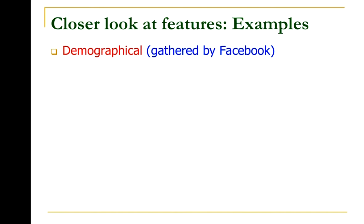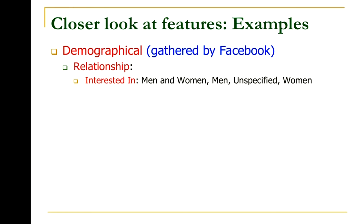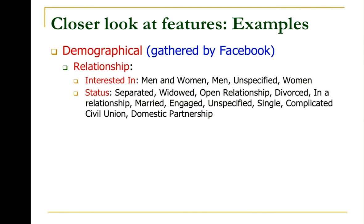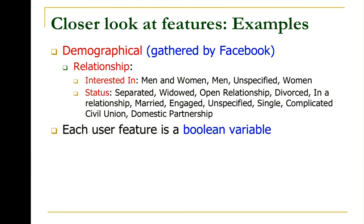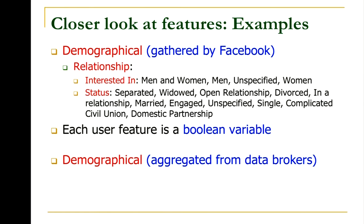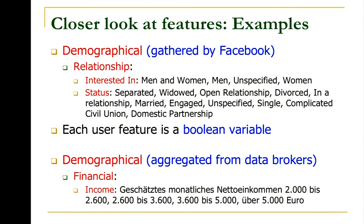To give a closer look at the granularity at which Facebook infers data: in demographic data there is a relationship field that categorizes whether you're interested in men, women, or both. Facebook also tries to infer marital status — separated, in an open relationship, divorced, married, and so on. Each user feature is essentially a Boolean variable, zero or one. For example, in Germany everybody is put into four different income bins — Facebook knows whether you're earning between 2,000 and 2,600 euros or more than 5,000 euros. These are the kinds of data and granularity at which Facebook knows about our lives.